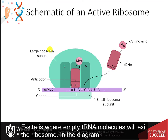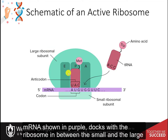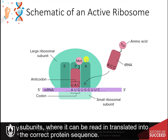In the diagram, messenger RNA, shown in purple, docks with the ribosome in between the small and the large subunits, where it can be read and translated into the correct protein sequence.